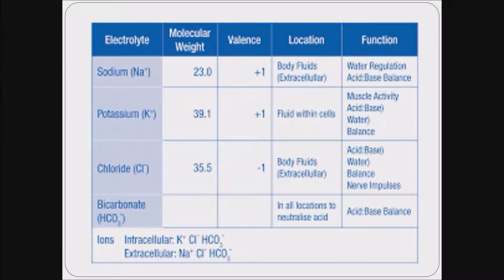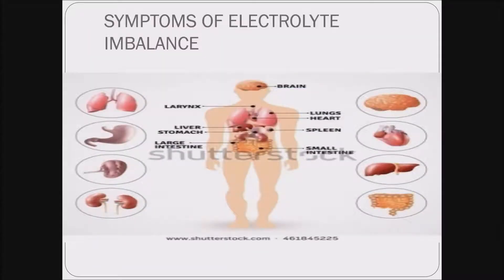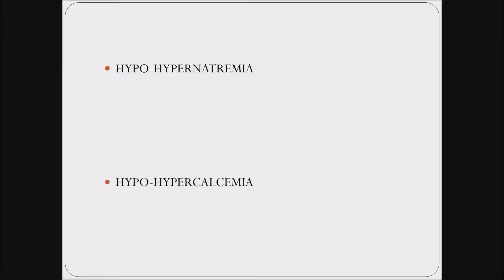Each electrolyte has a specific function to perform. For example, sodium deals with water regulation and acid-base balance, while potassium deals with muscle activity and so on. When there is any abnormality involving these electrolytes — either decrease or increase — they may present with various symptoms involving neurological, gastrointestinal or musculoskeletal systems. Depending upon the symptoms, we can categorize whether it is hypo- or hypernatremia, calcemia, kalemia or magnesemia.